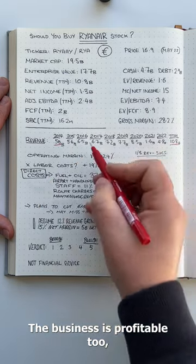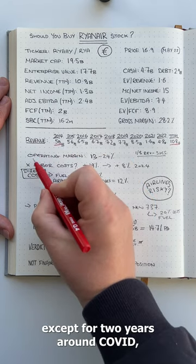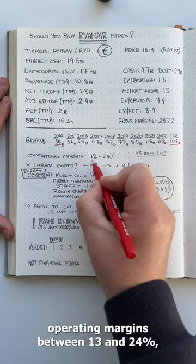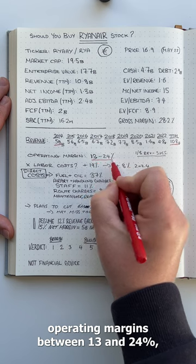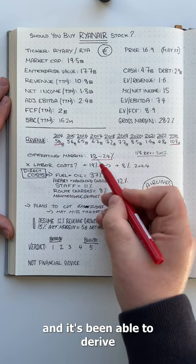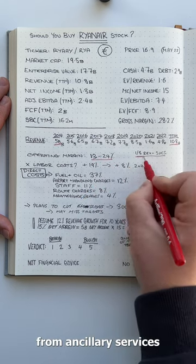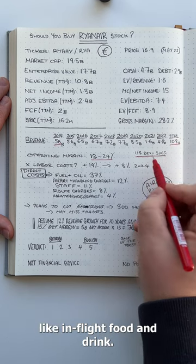The business is profitable too. Except for two years around COVID, the company has had impressive operating margins between 13 and 24%, and it's been able to derive a third of its revenues from ancillary services like in-flight food and drink.